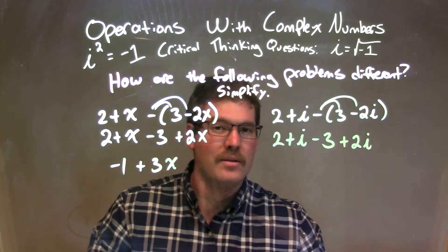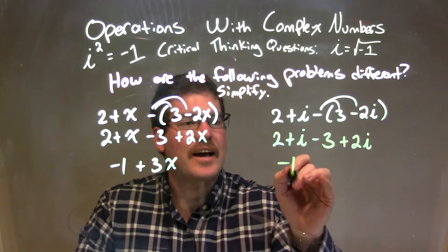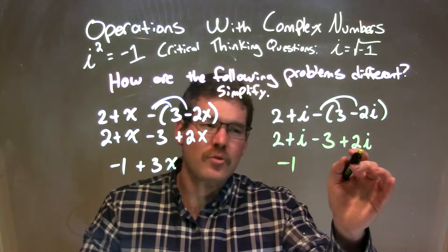At this point, when we combine our like numbers, 2 and a negative 3 is a negative 1. And i and 2i are 3i.